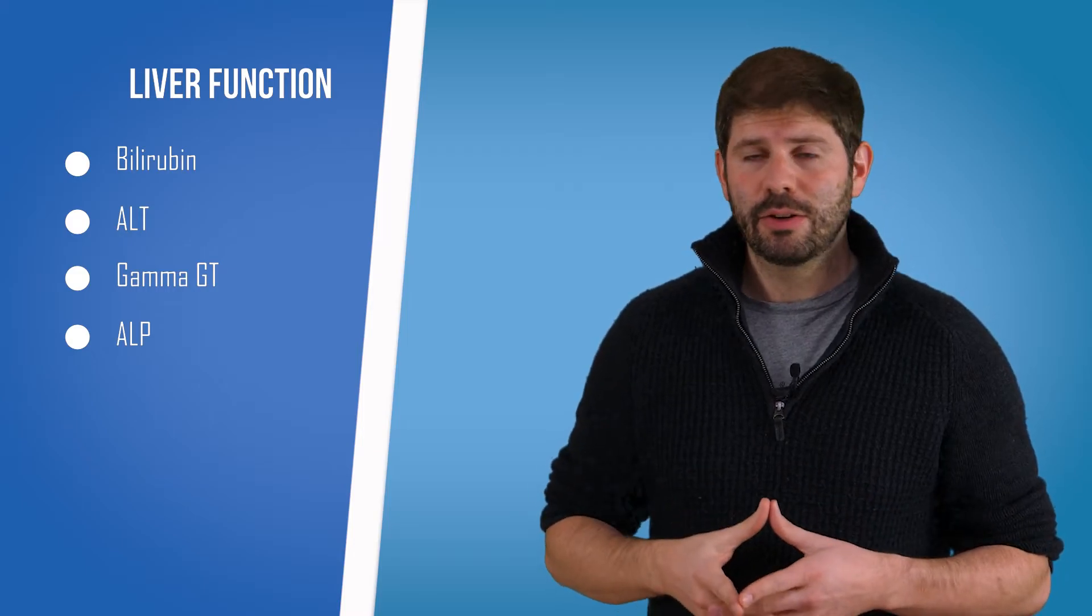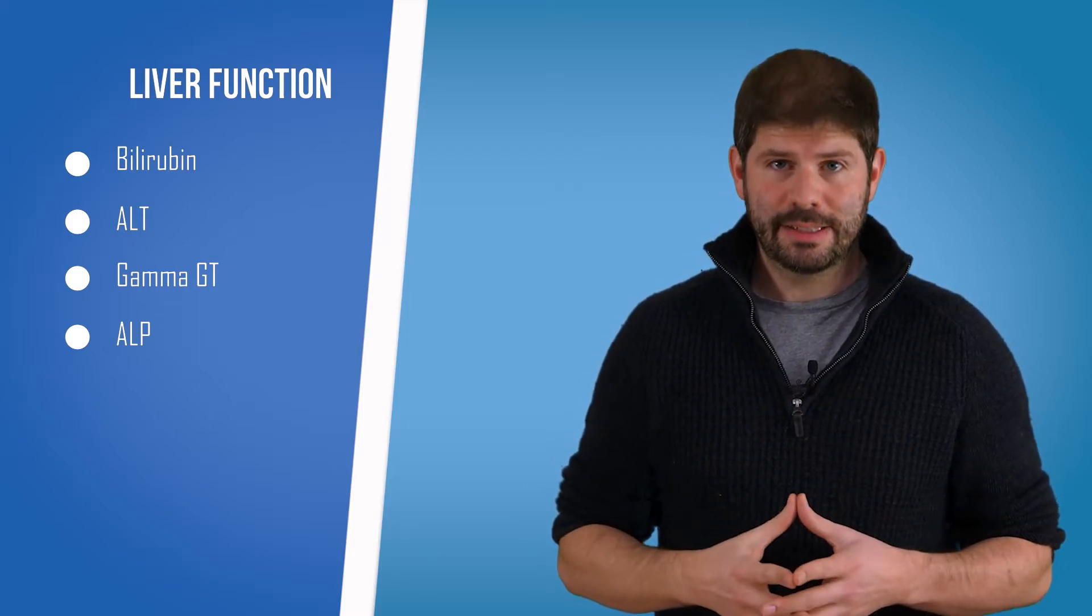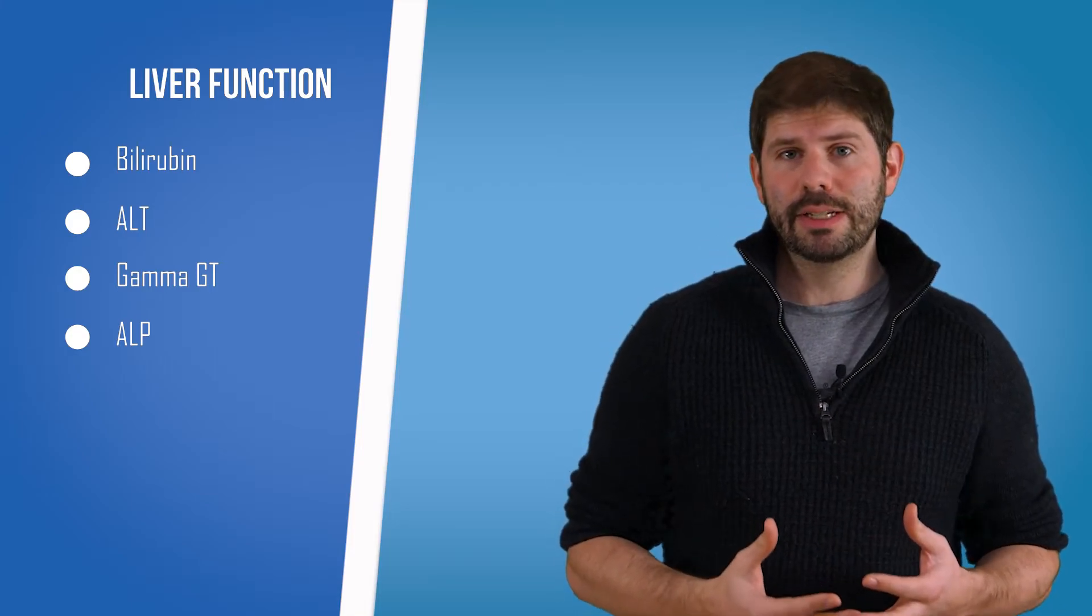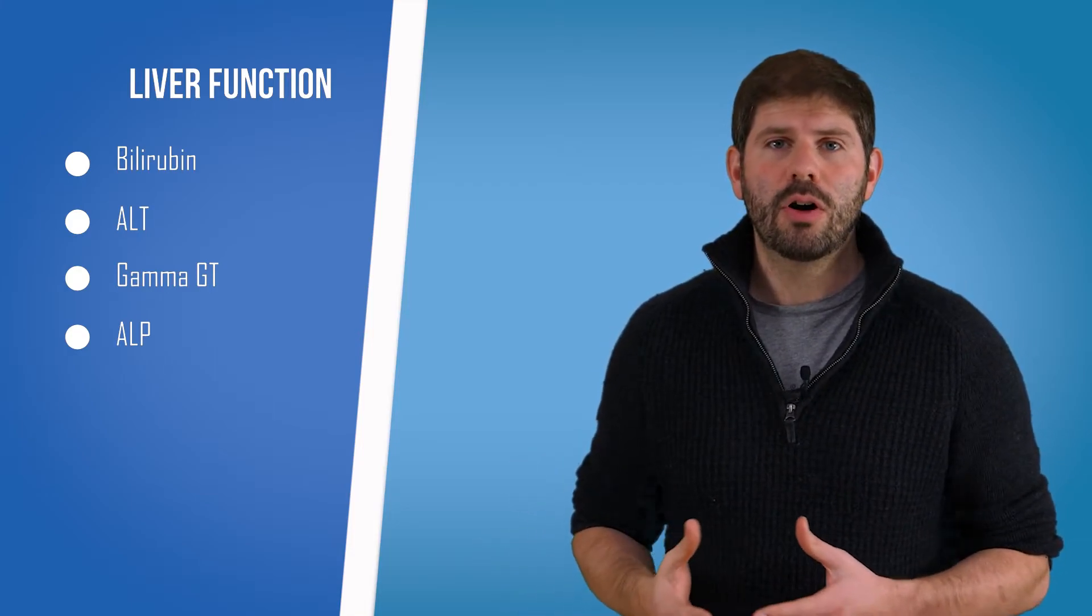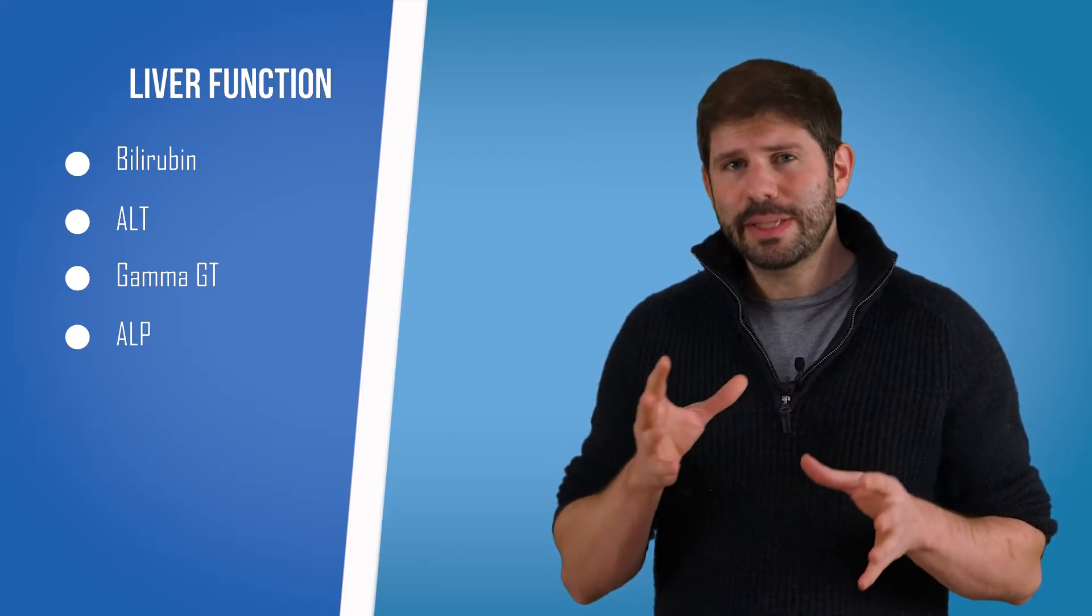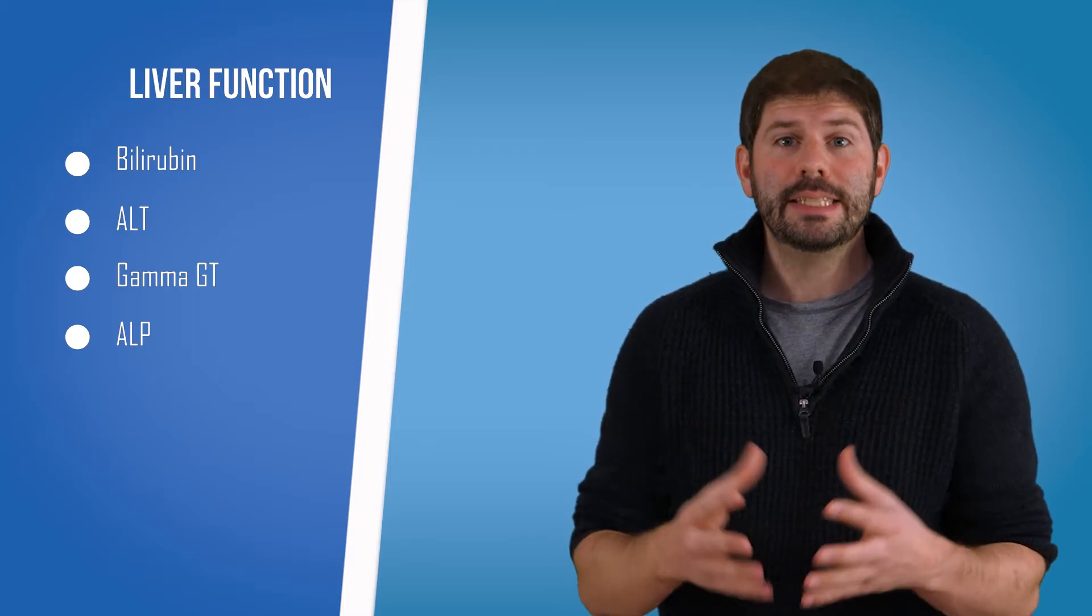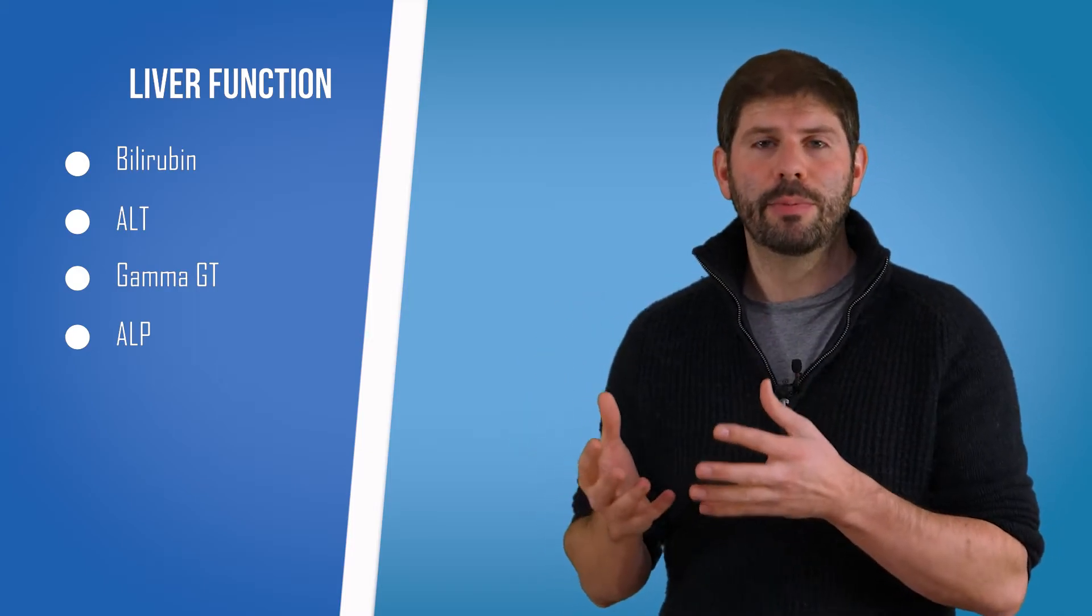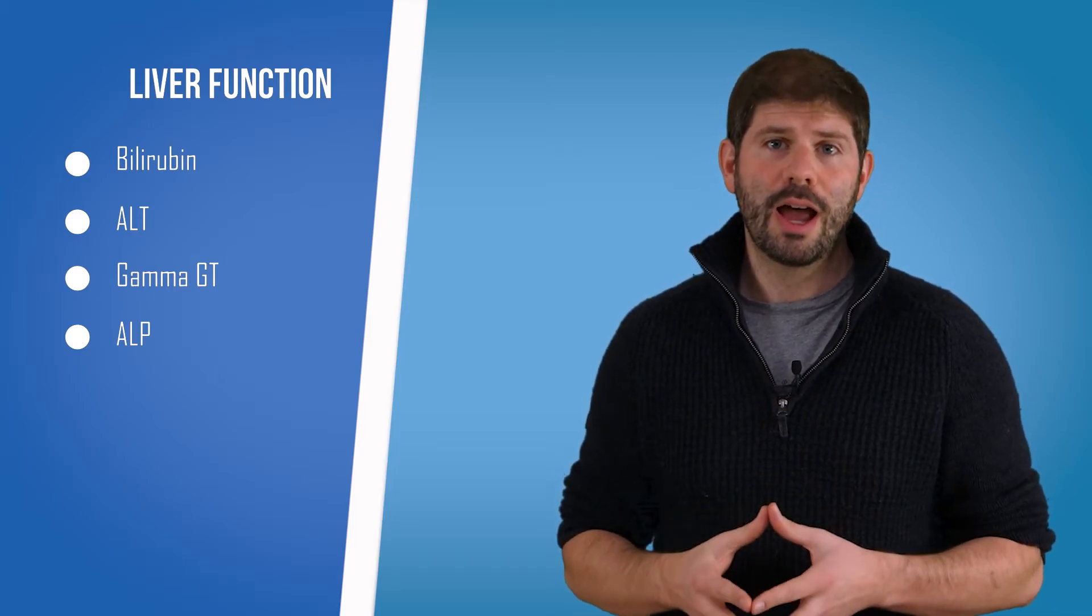Now onto GGT or gamma GT. This is another enzyme from the liver, and again it goes up when there's damage to the liver itself. Sometimes it's because of drugs or alcohol, but sometimes it's just infection as well. It is a non-specific marker, but it can give us an idea about what might be causing your liver markers to go off a little bit, especially when we talk to you about what's going on in your life.